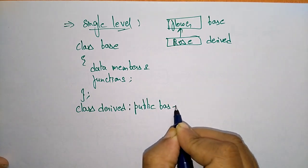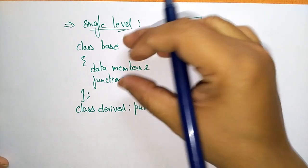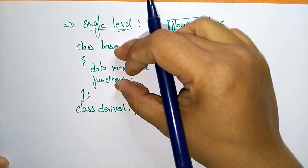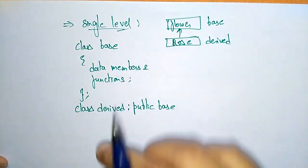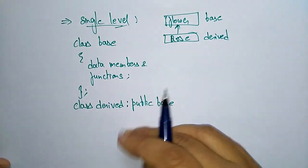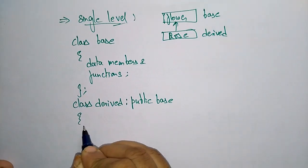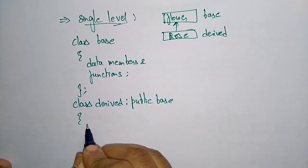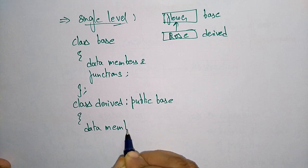In the derived class, you acquire the properties of the base class into the derived class. The derived class has its own data members and functions as well. So you first write the base class, then from the base class you derive the derived class — this is the syntax for single-level inheritance.